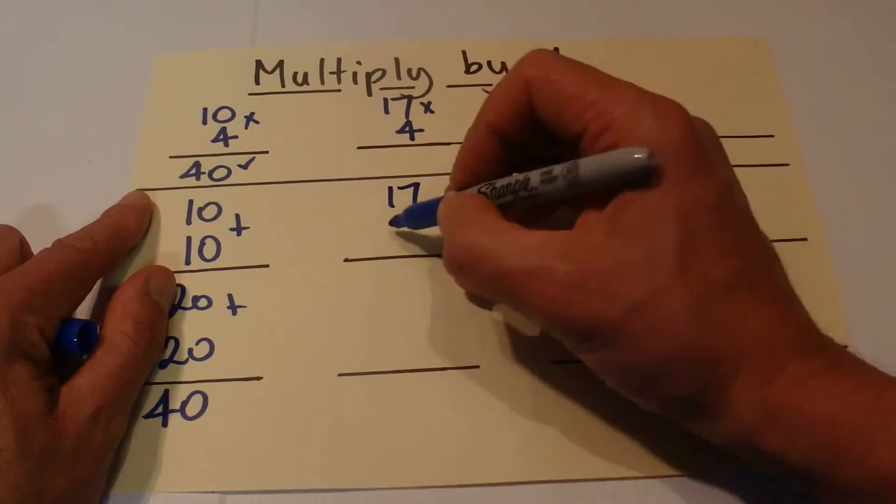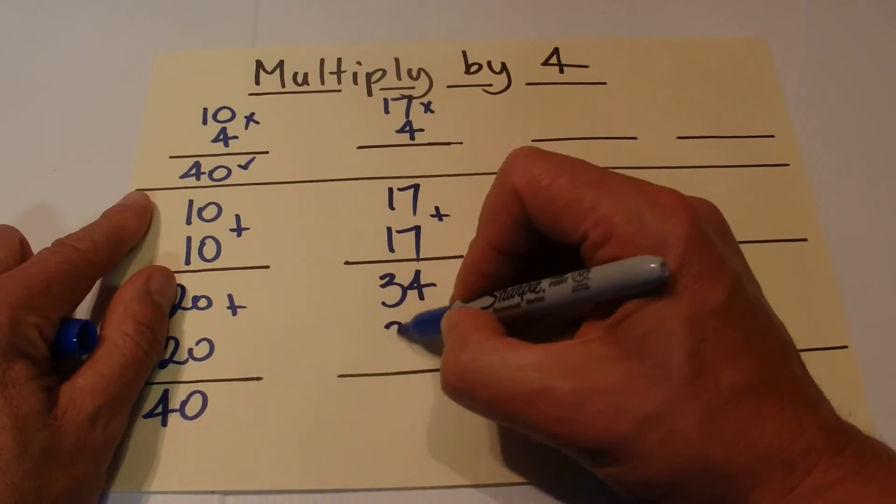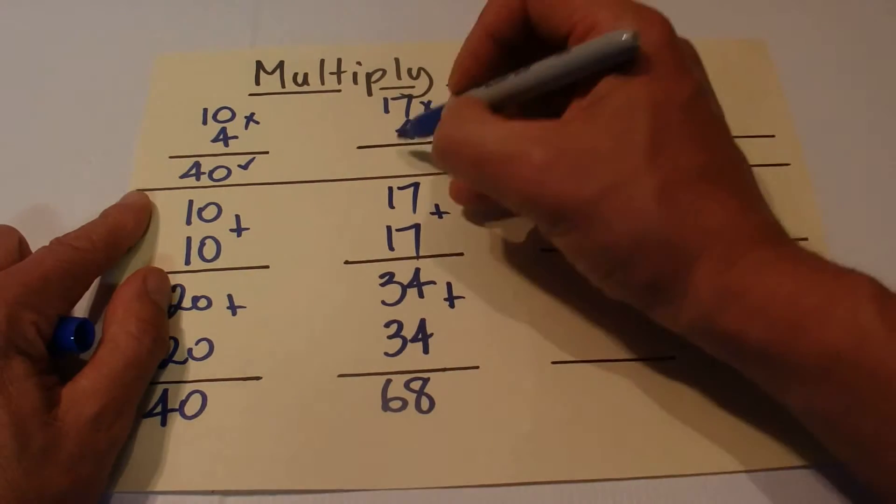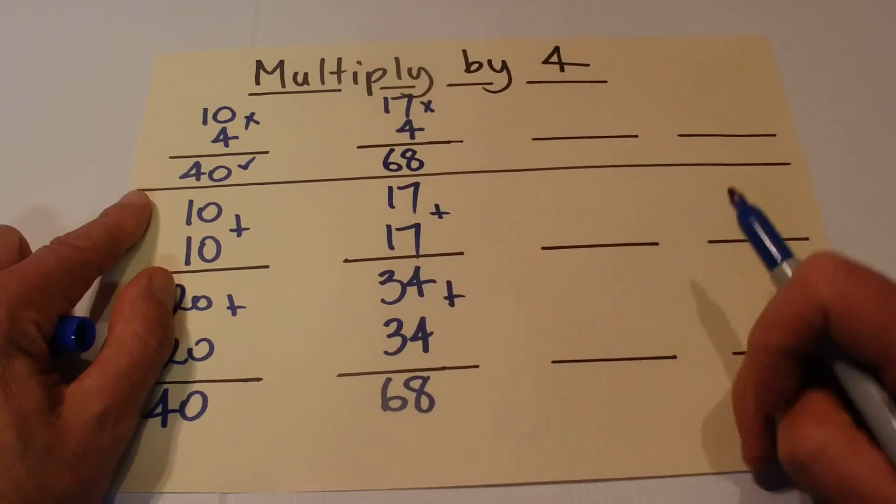So the next one, 17 times 4, is a little bit more difficult. What we're going to do is double that: 17 plus 17 is 34, and 34 plus 34 equals 68. You don't need a calculator to do that one.